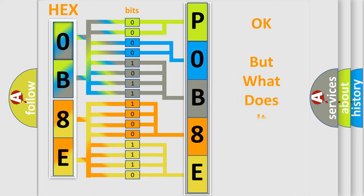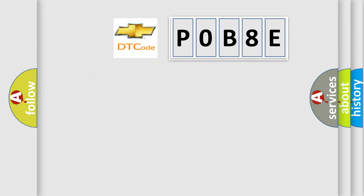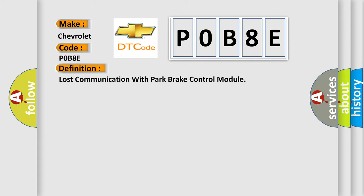The number itself does not make sense to us if we cannot assign information about what it actually expresses. So, what does the Diagnostic Trouble Code interpret specifically for Chevrolet car manufacturers? The basic definition is lost communication with park brake control module.